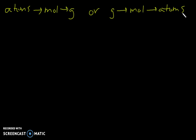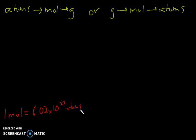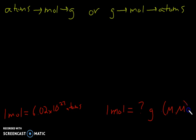We're going to be using the same two conversion factors as before. For the moles-to-atoms portion, one mole is equal to 6.02×10²³ atoms. For the other one, one mole is equal to some number of grams, which is the molar mass, abbreviated mm. Those are our two conversions that we use.